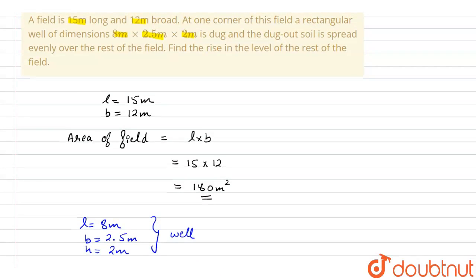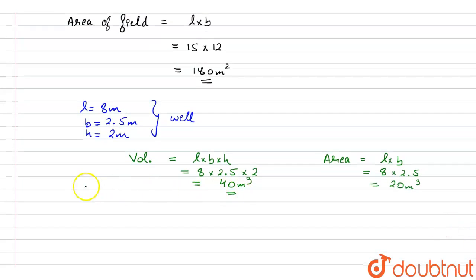Now we have to find out how much is the rise in the level of the rest of the field. So first of all, we will find out the area of the remaining field. So area of remaining field will be equal to, because now a well has been dug out, the area of the field, that is 180, minus the area of the well, that is 20. So this will come out to be 160 meter square. So this is the remaining area.